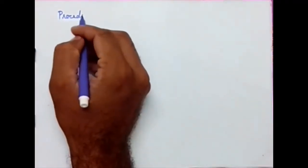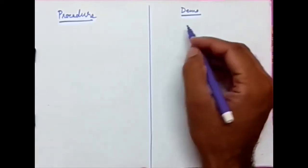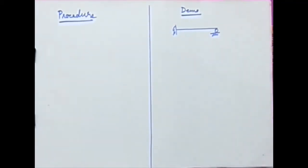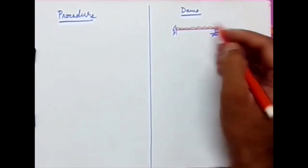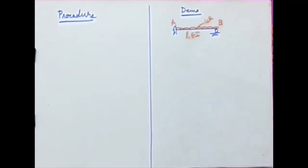We are going to see the different steps involved in analyzing a beam using the consistent deformation method. We will go through the procedure on one side and a demo on the other side, writing the steps and working through an example together. Let's consider the analysis of a propped cantilever — the very first structure we analyzed — subjected to a UDL having intensity W, with properties EI, spanning A to B.